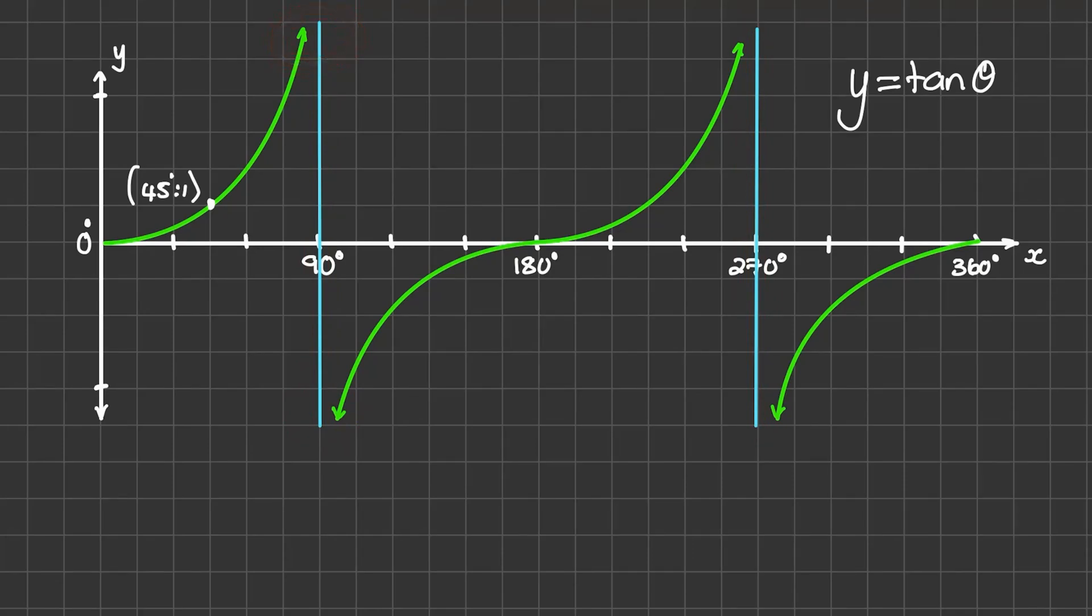So an asymptote is a value where a graph or a function does not exist. So the tangent of theta does not exist at 90 degrees and it also doesn't exist at 270 degrees. We can see that from 0 to 90 degrees, the tangent of theta gets extremely positive. It will get extremely close to 90 degrees, but it will never intersect that graph.